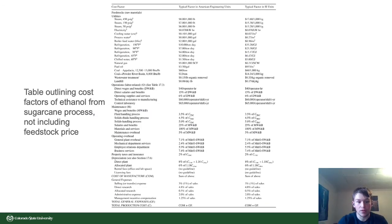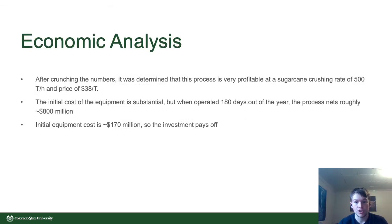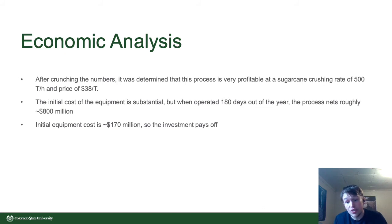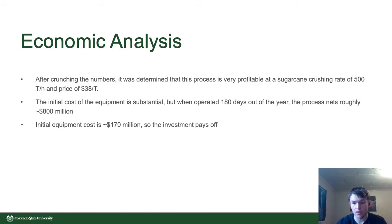This table outlines all the different cost factors involved in ethanol production from sugarcane, including natural gas, coal prices, and wage prices. At a sugarcane crushing rate of 500 tons per hour and at a price of $38 per ton, it was determined that this is an extremely profitable process. The initial cost of the equipment runs to about $170 million, which is a lot, but at 180 days per year operation — only half the year during sugarcane season — it has a net profit of roughly $800 million US dollars.